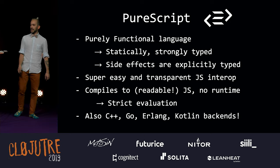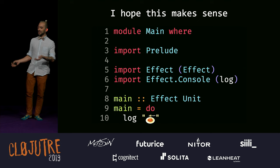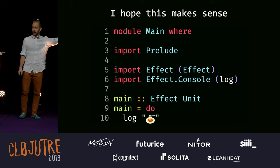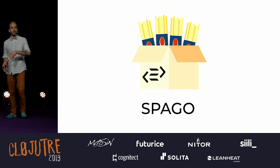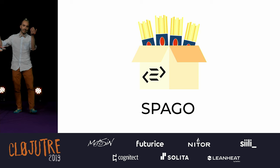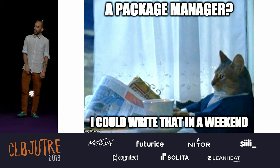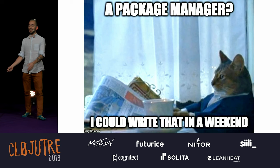This is how PureScript looks like, and this is the only code we're going to have today. We declare a module, then we import a bunch of things, and then we have a function that returns a side effect and returns void in the end. It just logs a nice plate of spaghetti. This code is what you get if you start a new project with Spago. I spent the last year writing a new package manager for PureScript, and today it's one of the main ones. As you can imagine, it did not take a week — it took one year.